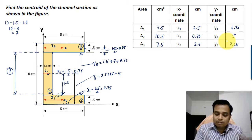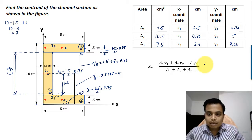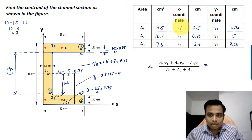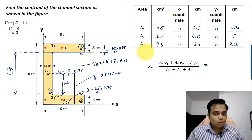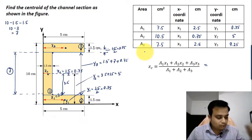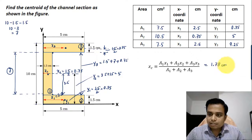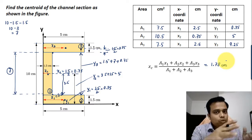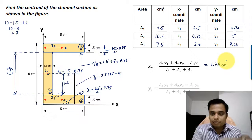Now finally this is the formula we're going to be applying for calculating the x coordinate. When you apply this formula and put in all these values of x1, x2, x3, and A1, A2, A3, the final value of the x coordinate of the centroid is 1.78 centimeters, rounded off to two decimal places.